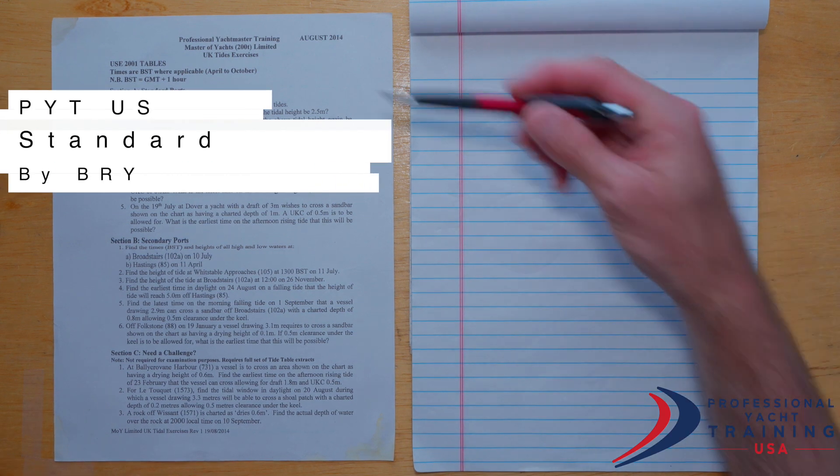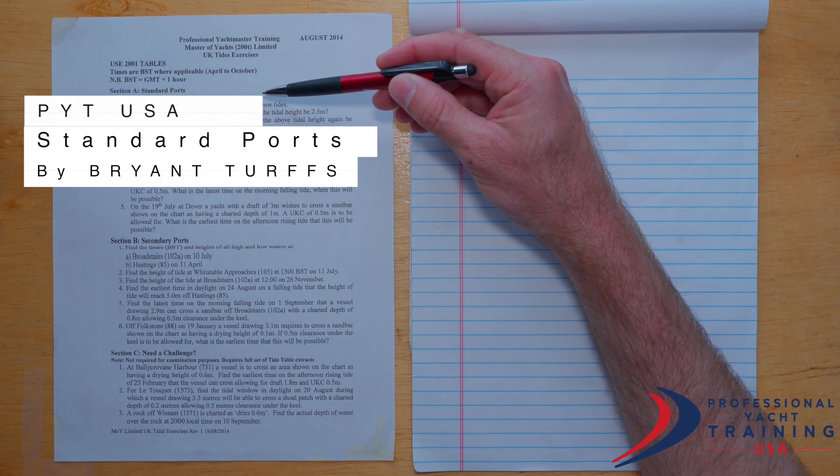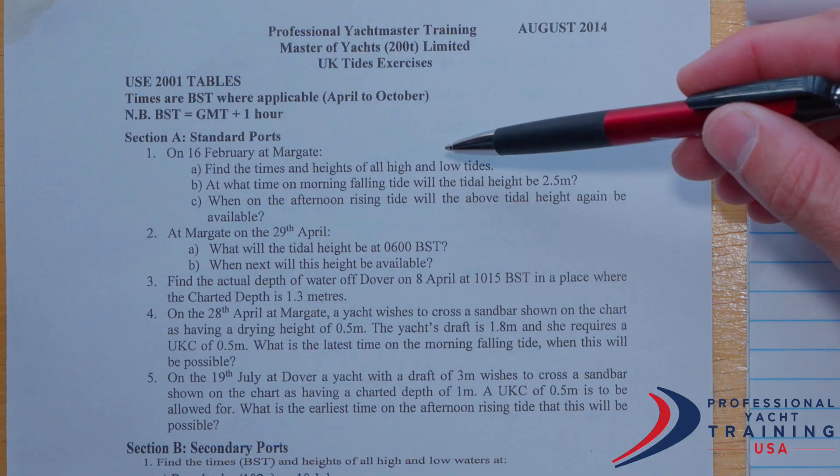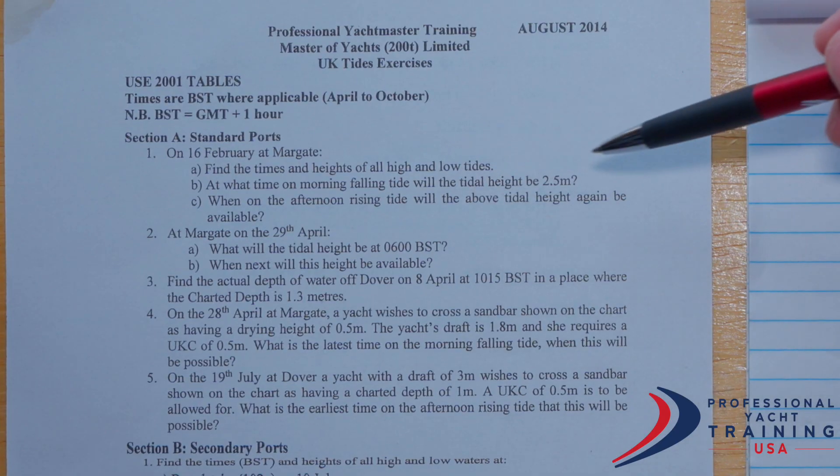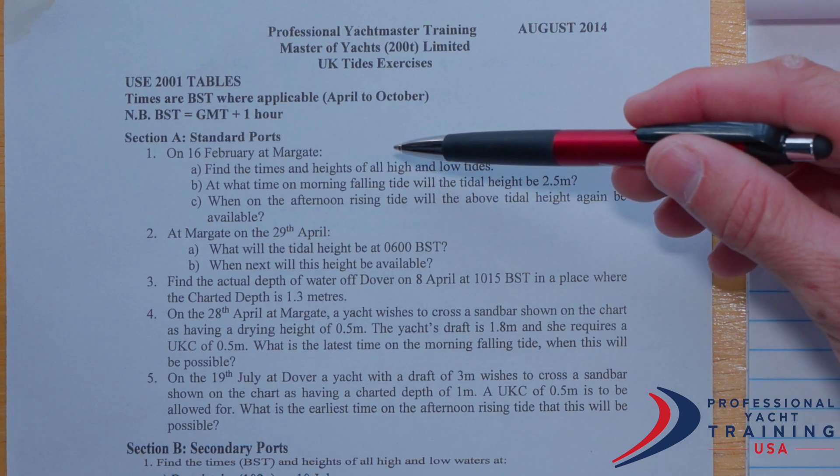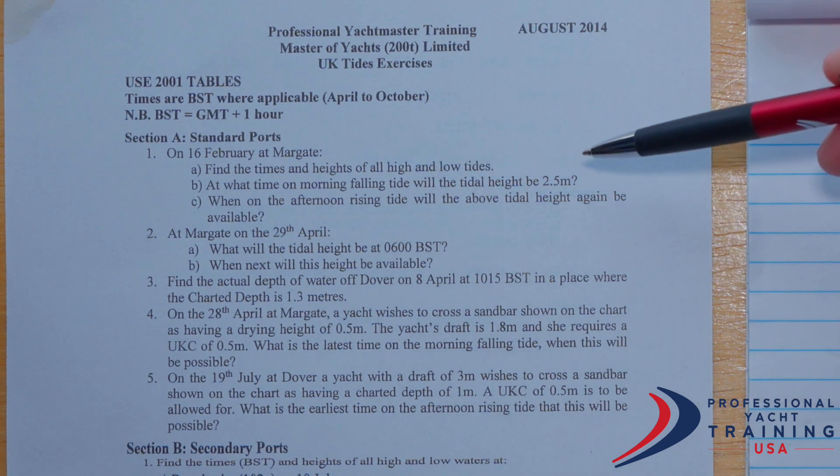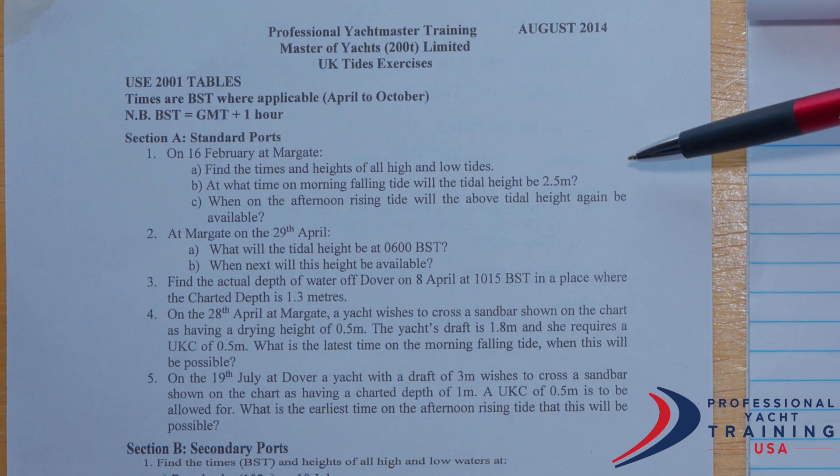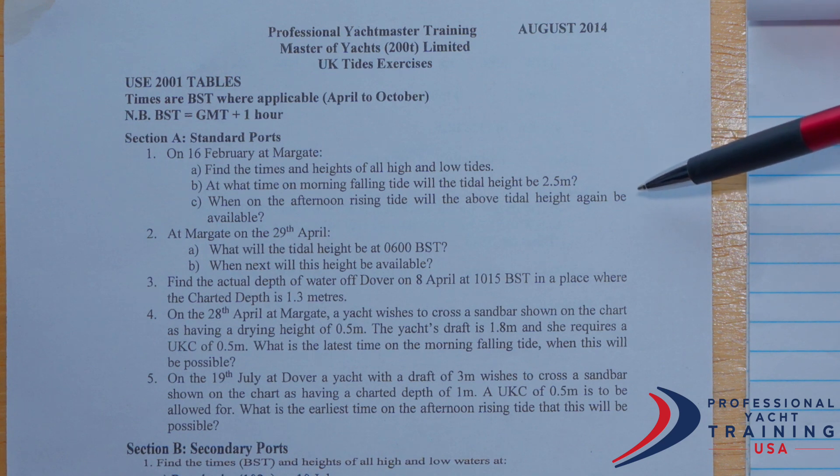We're going to look at section A, standard port tidal exercise question number one, which asks us for three pieces of information regarding Margate on the 16th of February. We're going to find the times and heights of all high and low tides on that day. We're going to find at what time on the morning falling tide the tidal height will reach two and a half meters and when that tidal height will again be available on the afternoon rising tide for part C.